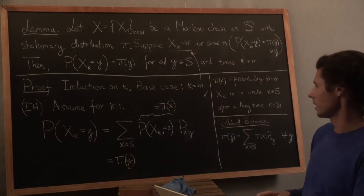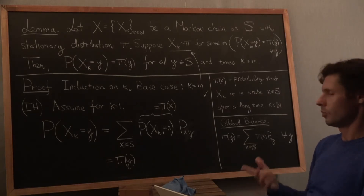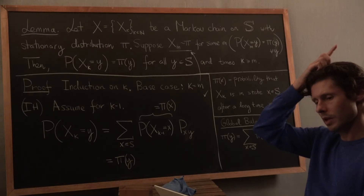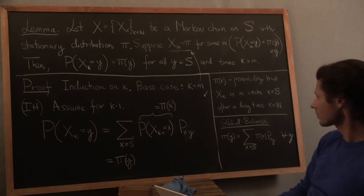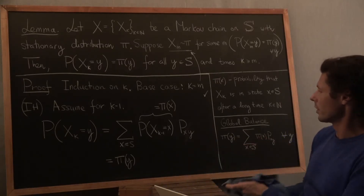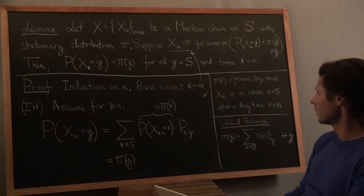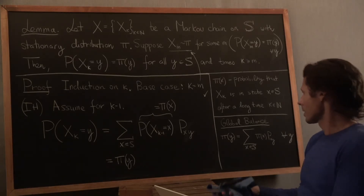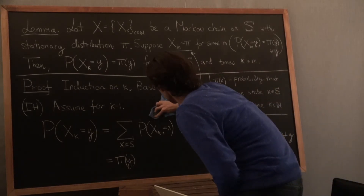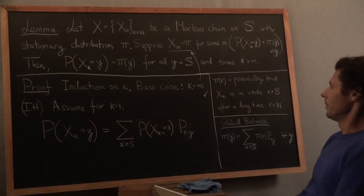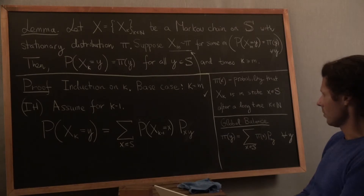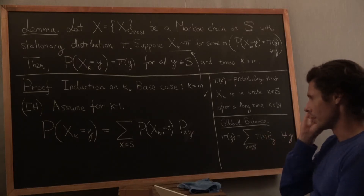That establishes the whole thing by induction — we proved the base case, assumed true for k minus 1, proved it for the next step, and therefore by induction it's true for all times after m. Hopefully that was convincing; if not, you can look at other inductive arguments in Ross. But let's back up to this original statement — I left it on the table, and it certainly makes sense, but is it really true, and how does one approach establishing it rigorously?